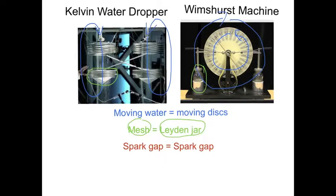Another similarity that I'll point out is the spark gap. So the Kelvin water dropper has got a spark gap which I just circled there, and the Wimshurst machine has got a similar spark gap on it as well.